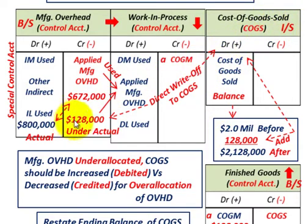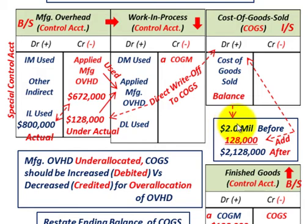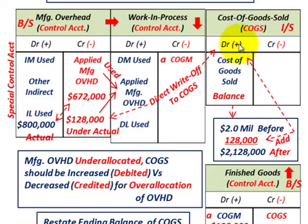The $128,000 under-allocated amount requires us to credit the manufacturing overhead control account by $128,000 to clear it, and debit cost of goods sold directly for $128,000. So before our adjustment, we had $2,000,000 in cost of goods sold. After adding the $128,000 of under-allocated overhead, our total cost of goods sold becomes $2,128,000. This increases our cost of goods sold and, in essence, reduces our net income, since cost of goods sold is an expense account offsetting our revenues.